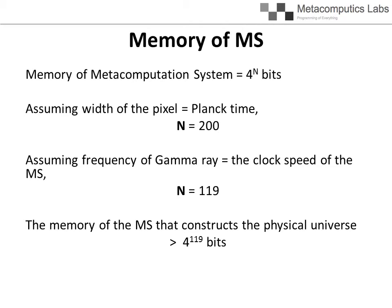Practically, we can assume the clock speed of the MS that creates the physical universe is the maximum detectable frequency of electromagnetic waves in the physical universe. According to this model, all phenomena, including electromagnetic waves, are a processing output of the MS. Therefore, the frequency of the processing output cannot exceed the clock speed of the MS.